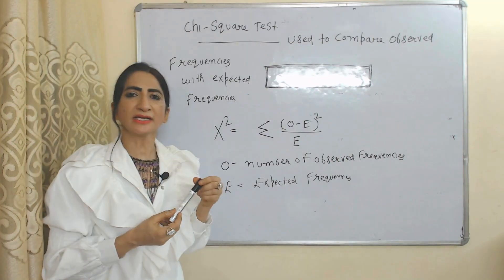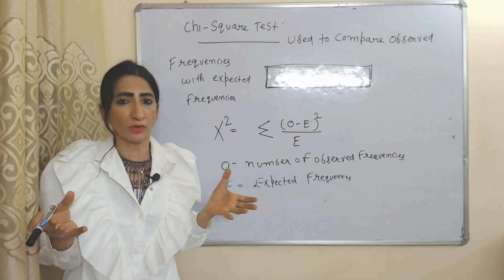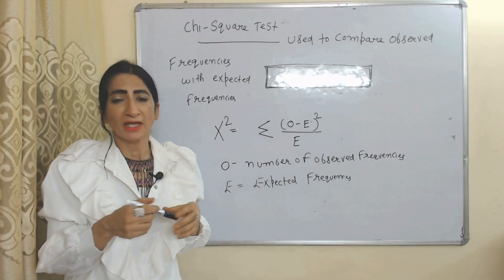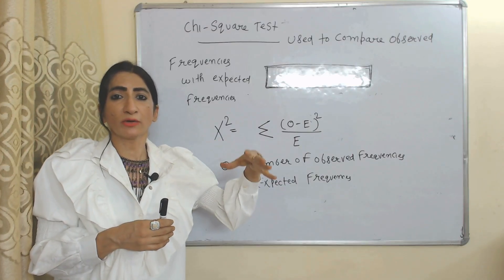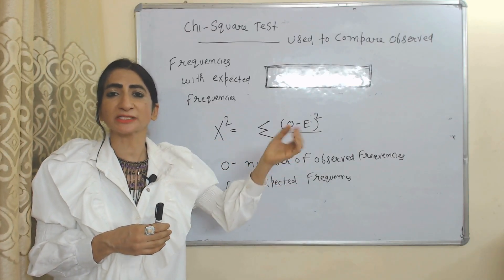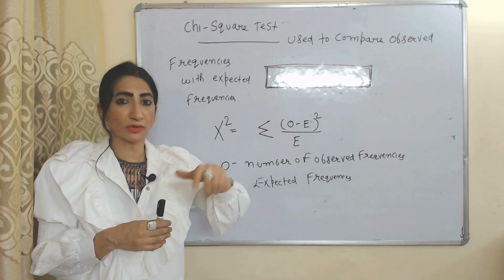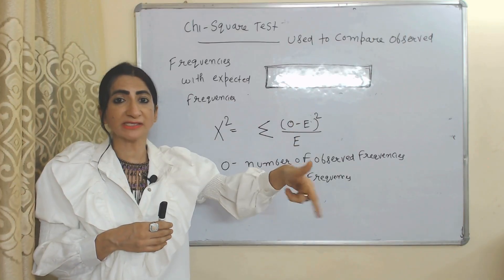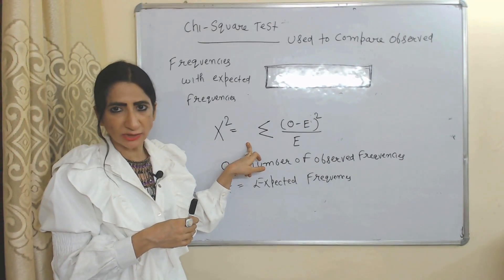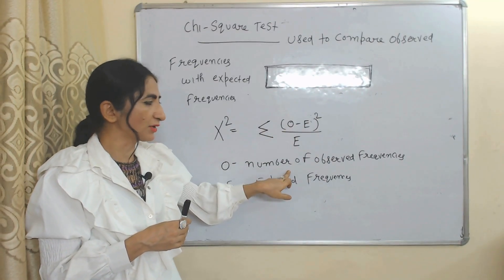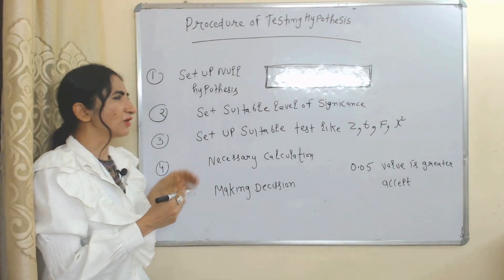Chi-square test: the chi-square test is a very important non-parametric test. We mainly use the chi-square test to compare observed frequencies with expected frequencies. In the formula, O represents the number of observed frequencies and E represents expected frequencies.